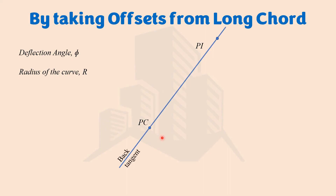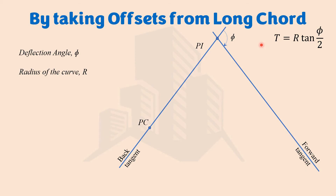We will also know the point where the curve starts — the Point of Commencement (PC). Joining them gives the back tangent. Since the deflection angle is known, using any instrument that can measure horizontal angles we can mark the forward tangent. With the deflection angle and radius known, we can calculate the tangent length using the relevant formula, and then mark the Point of Tangency (BT) where the curve ends. Marking straight lines on field is straightforward, but marking a curve is difficult — that's why we use this method.